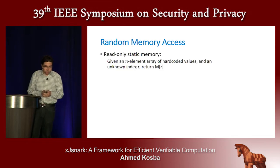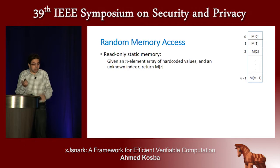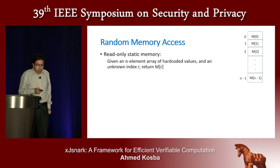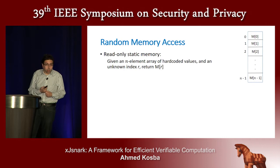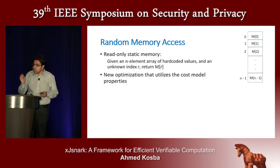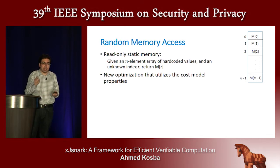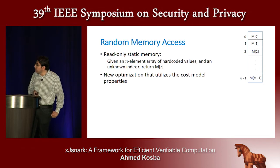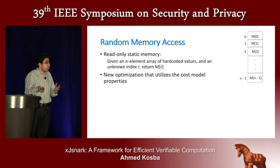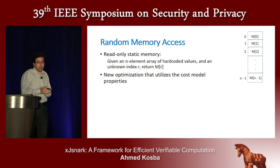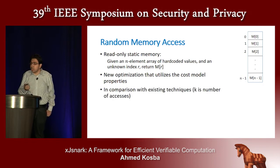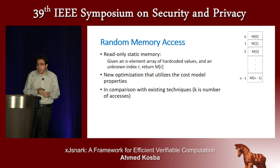For random memory access, specifically read-only static memory — given a set of hard-coded values and an unknown index R at runtime, return the value at a specific index — the currently available approaches are either Merkle trees, a linear scan, or a permutation network. We describe a new optimization specific to the cost model of QAP-based ZKSNARKs. It relies on multiplication by constants and non-determinism, and is based on dividing the array into square-root-of-n partitions, constructing a linear system offline for every partition. In the circuit, we just check membership by verifying whether the solution provided by the prover belongs to one of these sqrt(n) linear systems.